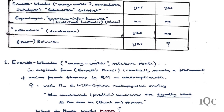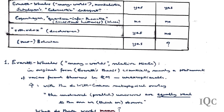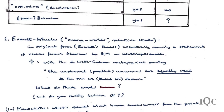The Everett-Wheeler, or many-worlds, or relative-state interpretation: in its original form in Everett's thesis and the Everett-Wheeler Reviews of Modern Physics paper, it is essentially a statement about formal theorems in quantum mechanics with a minimum of metaphysical overlay—at least as the speaker reads the paper.